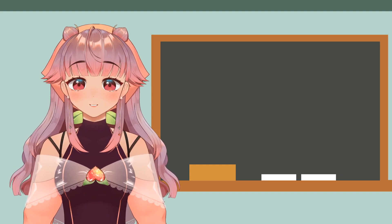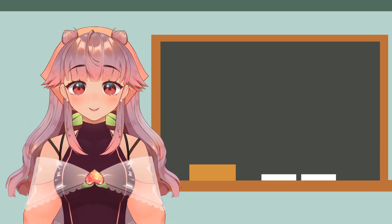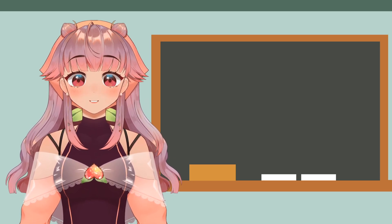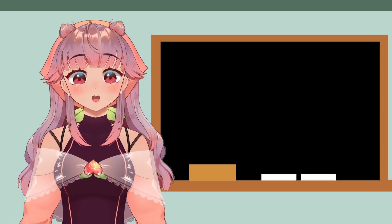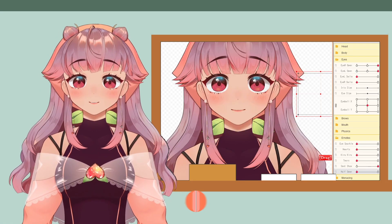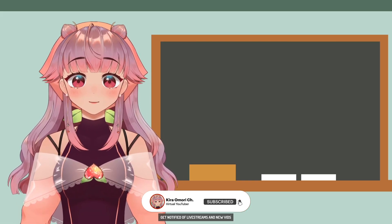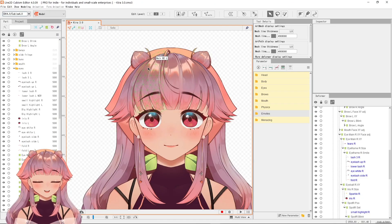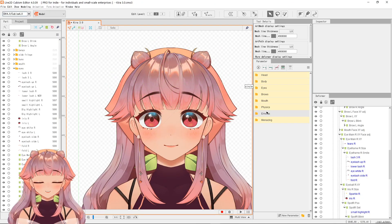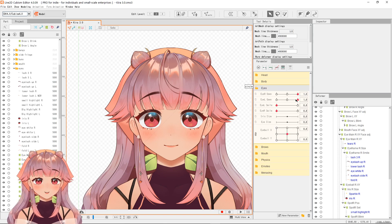The method I'm going to discuss is required for models that are going to be used in PiPi Live. You should also use this method if you want to make the eye half open and still have it blink in VTube Studio. This method is not recommended for free version users because of parameter assignment limits. I'm going to use my model as an example — the first thing I'll do is go to the facial feature I want to change, like Eye Open.